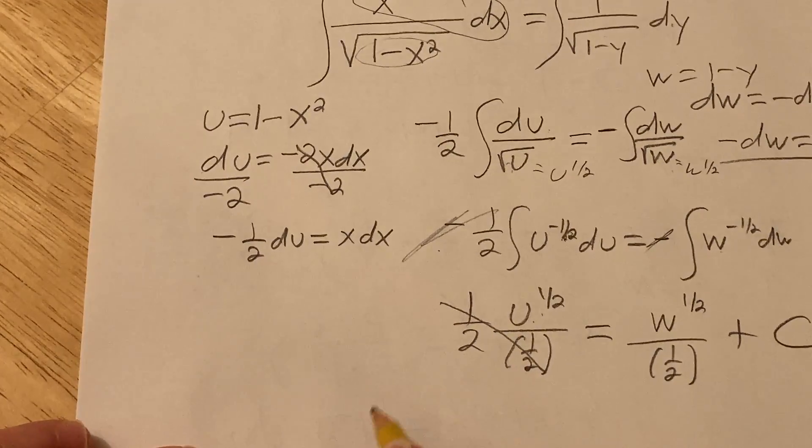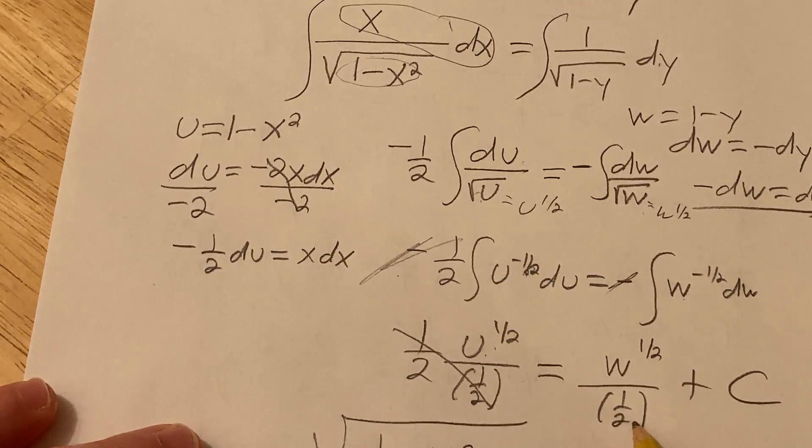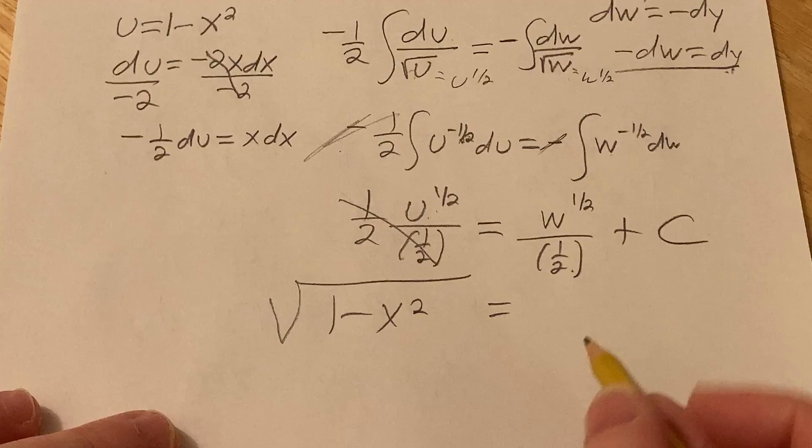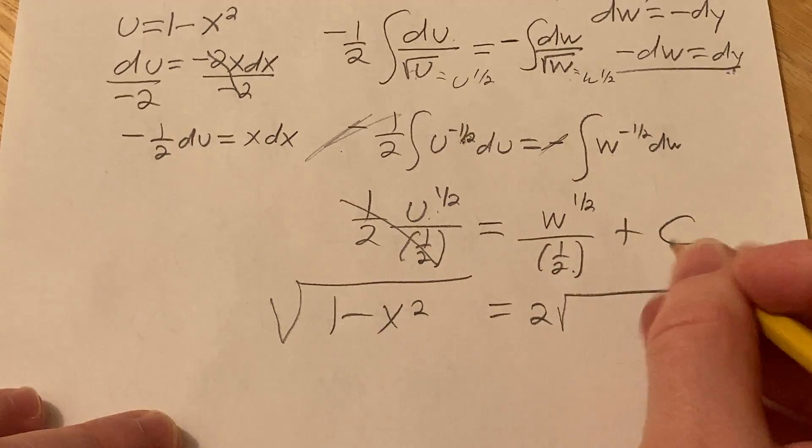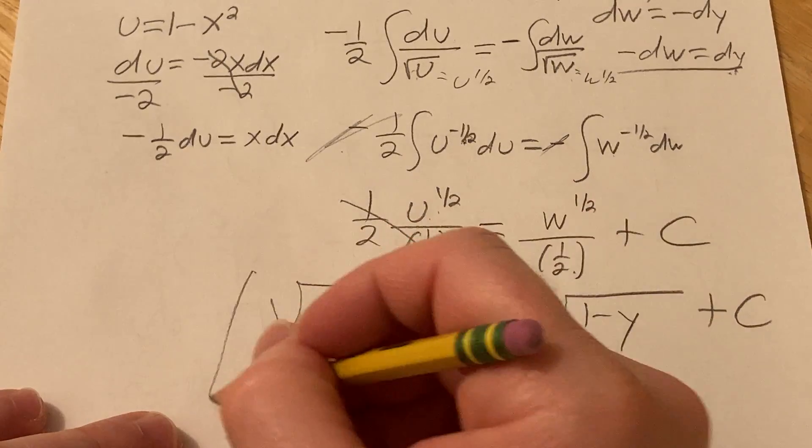Okay, this is the square root of u. u is 1 minus x squared. When you divide by 1 half, you really multiply by 2. So this is going to be 2 square root, and then w was 1 minus y, plus our constant of integration capital C.